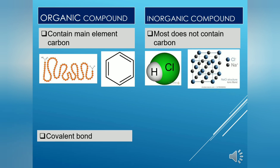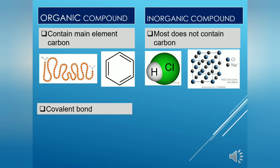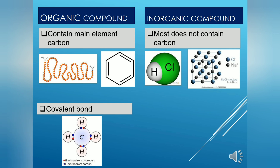Organic compound has covalent bonds because they are composed of non-metal atoms. Carbon can covalently bond with other atoms such as hydrogen, oxygen, and nitrogen. Whereas inorganic compound has ionic bonds, which are formed between metal and non-metal atoms.